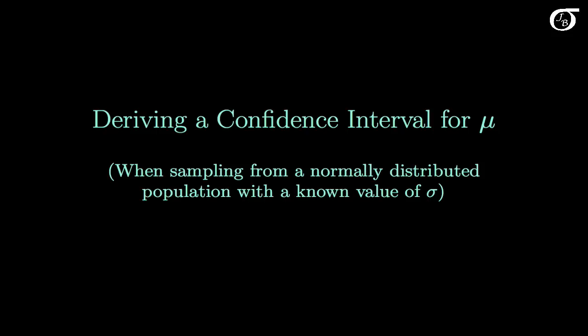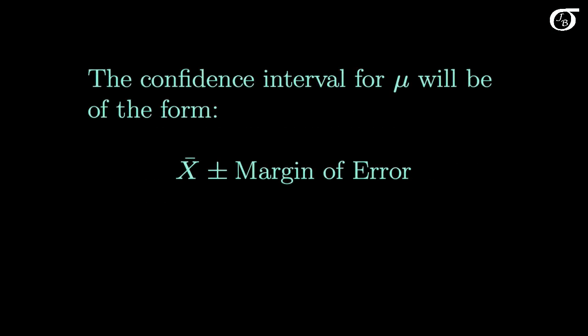Let's take a look at deriving a confidence interval for the population mean mu when sampling from a normally distributed population with a known value of the population standard deviation sigma. In this video I'm going to derive the appropriate confidence interval formula. The confidence interval for mu will be of the form x bar plus and minus the margin of error, where x bar is the sample mean, and we're going to determine the appropriate margin of error.